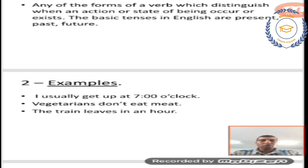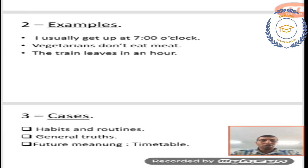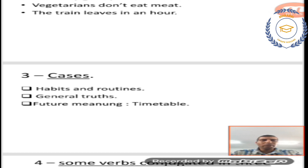To analyze and to study these examples, it leads us to the cases when we can use present simple. I put an example equivalent to each case. For example, I usually get up at 7 o'clock. Here, I'm talking about habits or routines that I do daily, every day, every week, every month.